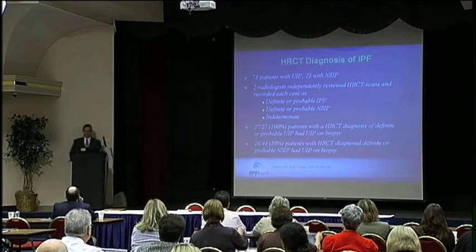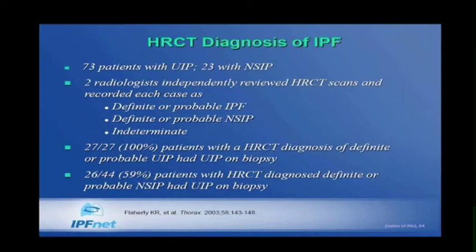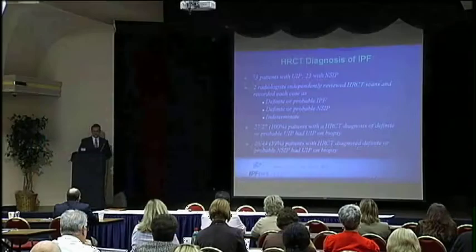Kevin Flaherty also did a similar study in Thorax. He had 73 patients with UIP and 23 with nonspecific interstitial pneumonitis, and he had two thoracic radiologists independently review the high-resolution CT scans, deciding whether they thought this was definite or probable IPF, definite or probable NSIP, or indeterminate. In the patients with a high-resolution CT diagnosis of definite or probable UIP, 27 out of 27 — 100% — had UIP on biopsy. For patients thought to have definite or probable NSIP, only 26 out of 44 had NSIP; most — 59% — were found to have UIP on biopsy. So patients with NSIP features on CT should probably get surgical lung biopsy.